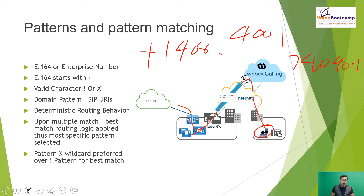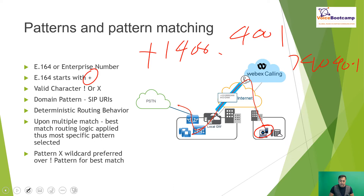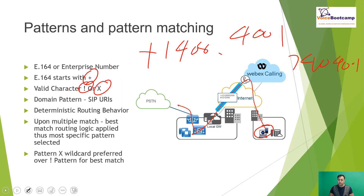The E.164 number always starts with a plus sign. This is an international format controlled by the ITU. A phone number in international format with a plus sign is followed by a subsequent sequence of digits — typically the country code, then the area code, and the remaining digits. The only valid wildcards used here are the exclamation mark and the X character. The exclamation mark matches any sequence of digits between 0 to 9, whereas X matches a single digit between 0 to 9.